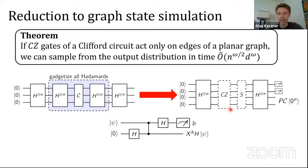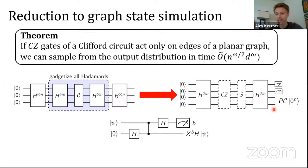The state produced right in the middle of this circuit is a graph state — a bunch of controlled-Z gates acting on the all-plus state. The second half of the circuit is just basis changes: either to the Y basis or X basis depending on whether there's an S gate. So measuring at the end of this circuit is exactly solving the graph state simulation task. The gadgetized qubits tell us which Pauli error we've made, and you can track how that error propagates through to the end and correct it.